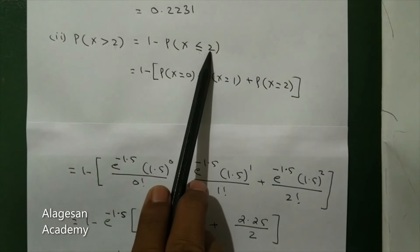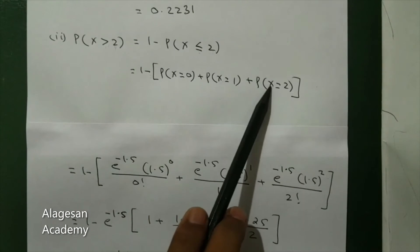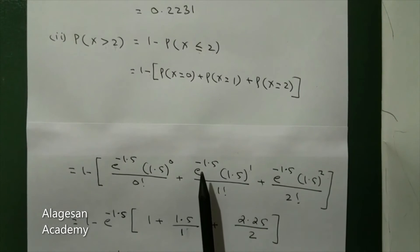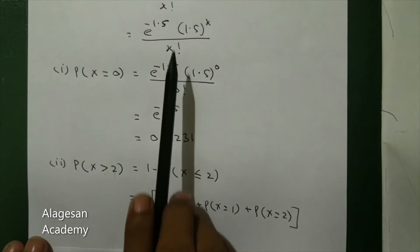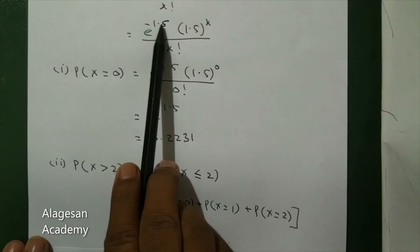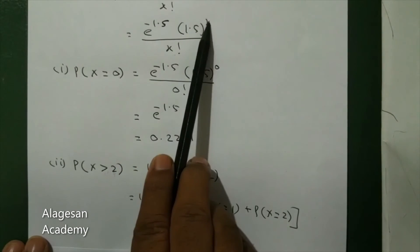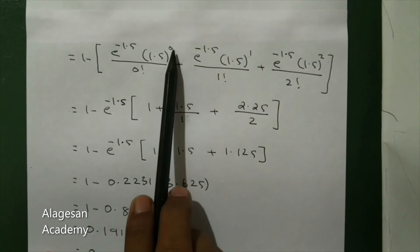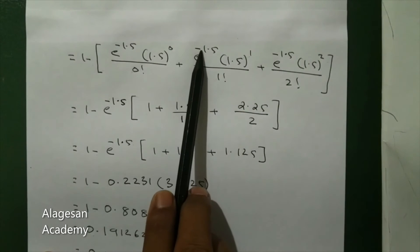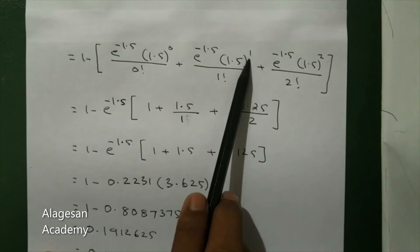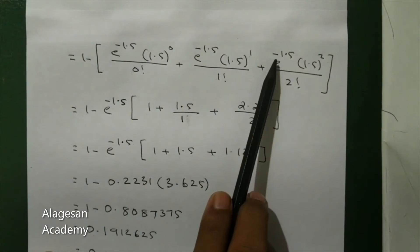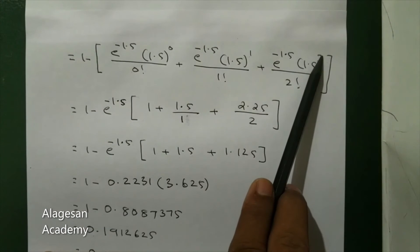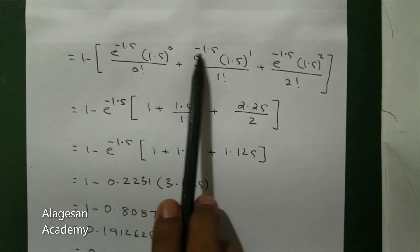So it becomes 1 minus P of X equal to 0, plus P of X equal to 1, plus P of X equal to 2. For P of X equal to 0: e power minus 1.5 into 1.5 power 0 by 0 factorial. For P of X equal to 1: e power minus 1.5 into 1.5 power 1 by 1 factorial. For P of X equal to 2: e power minus 1.5 into 1.5 squared by 2 factorial.